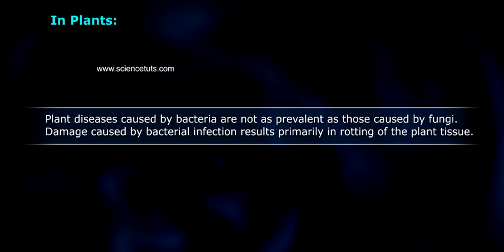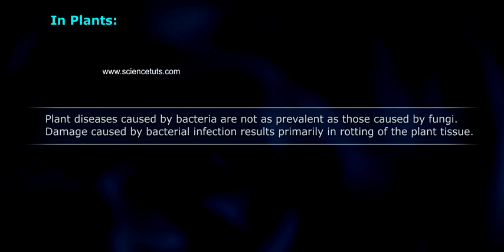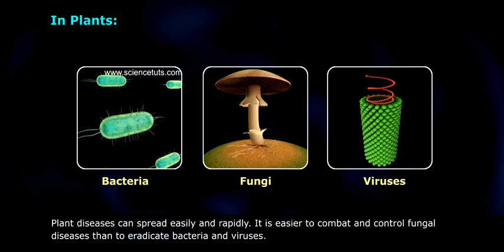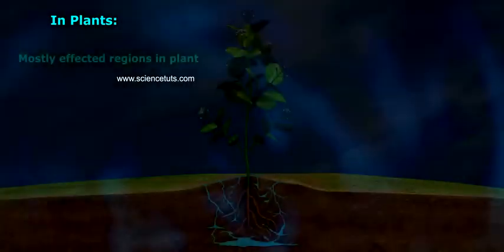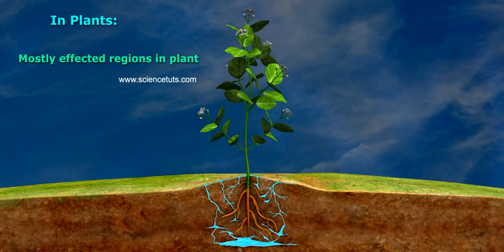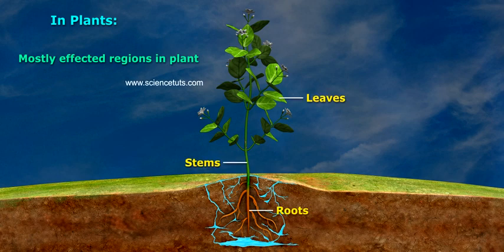Damage caused by bacterial infection results primarily in rotting of the plant tissue. Plant diseases can spread easily and rapidly. It is easier to combat and control fungal diseases than to eradicate bacteria and viruses. Mostly affected regions in plants include stems, leaves, and roots.